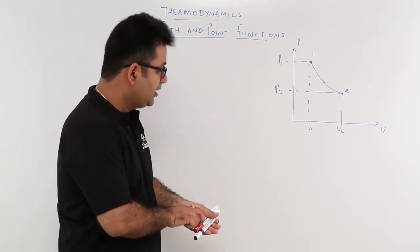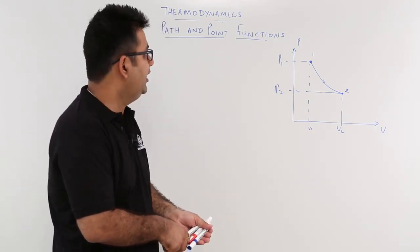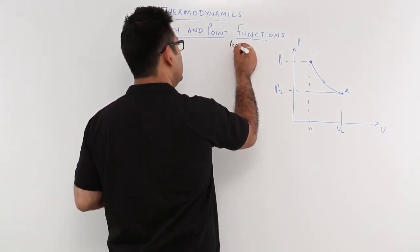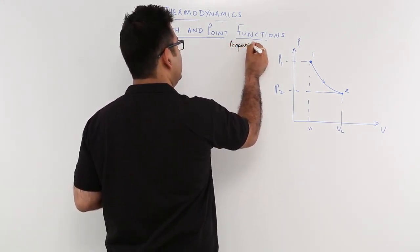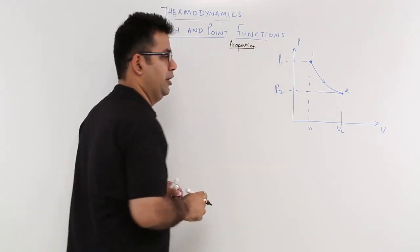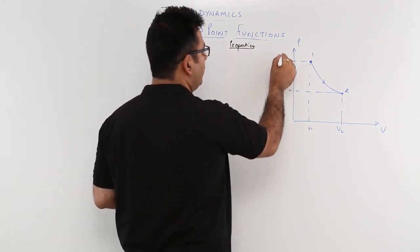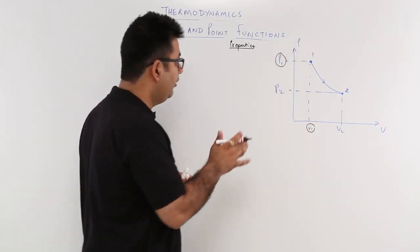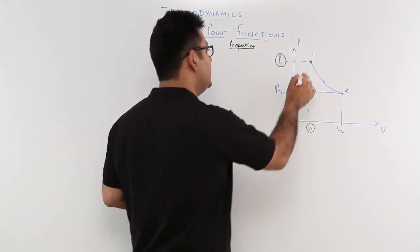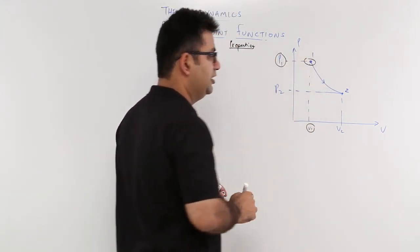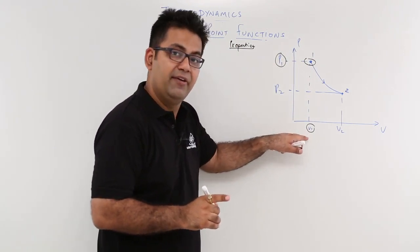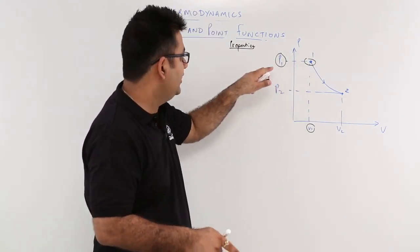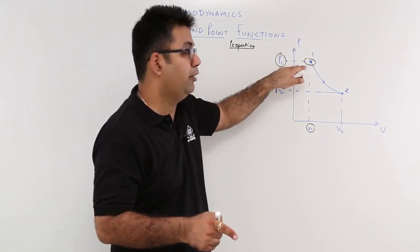Now if you talk about the functions — or I would say properties, another word for functions is properties over here. If I talk about the property P1 and V1, it particularly depends upon state 1. So this is a property which is only defined at this particular point.